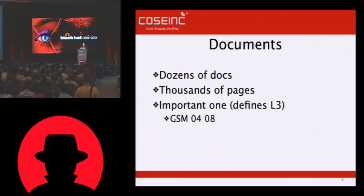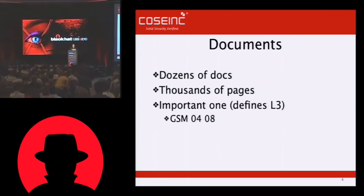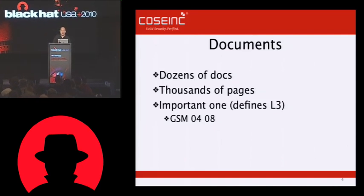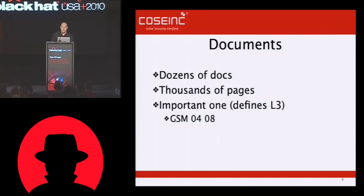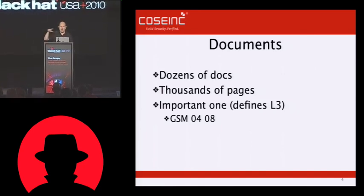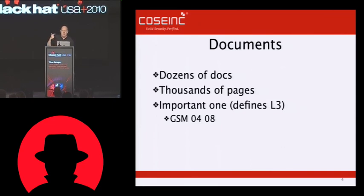The GSM protocol is absolutely huge. It's made up of dozens and dozens of documentation. There are thousand-page PDFs that you have to read. For example, to understand the L1 layer, which is the radio encoding layer, you have to read a 500-page document called GSM 0508. If you want to understand how the L3, the actual application layer works, you have to read GSM 0408, which describes the application layer. You have to read a separate GSM document which describes how the structure formats are defined, and then another one that describes how the definition of the structure formats are encoded. So you need to read three documents just to understand it.